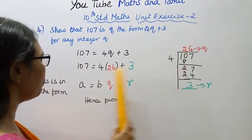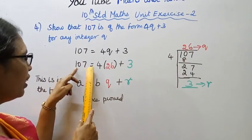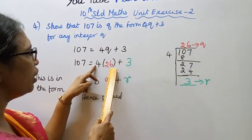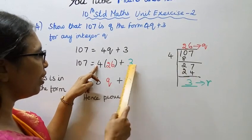This is quotient, this is remainder. So 107 equal to 4 times quotient, quotient number 26, plus remainder 3.